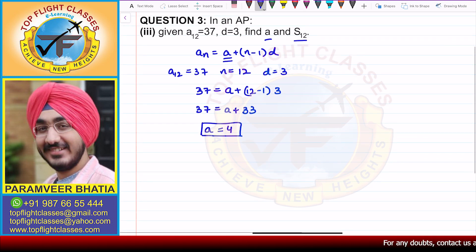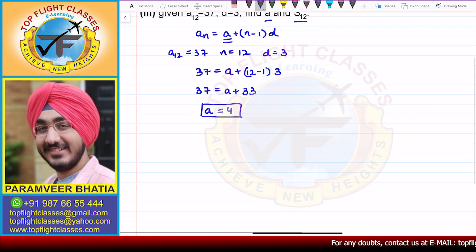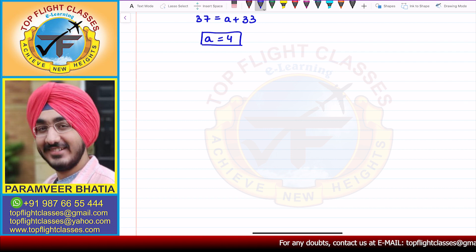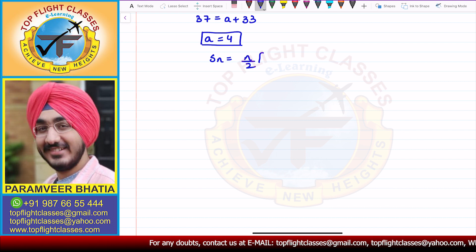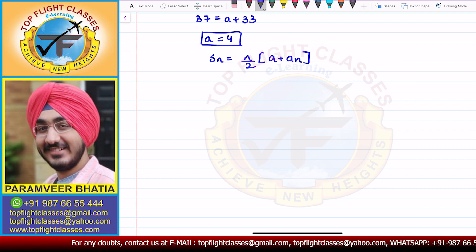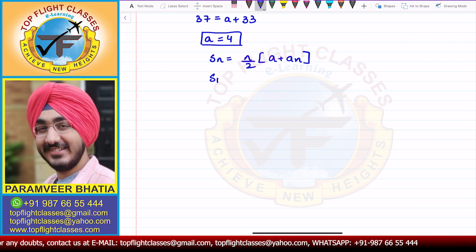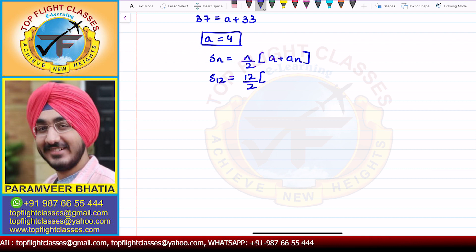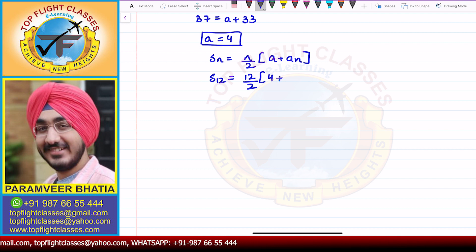Now I have to calculate S12. For the sum of n terms formula: Sn is equal to n by 2 times a plus an. For 12 terms, S12 is equal to 12 by 2, where a is equal to 4 and A12 is equal to 37.